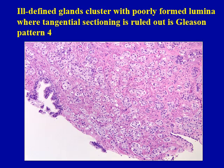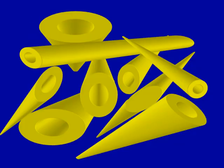This particular criteria was introduced in the 2005 ISUP modified grading system and was defined as a cluster of poorly formed glands where tangential sectioning is ruled out, warranting a diagnosis of Gleason pattern 4. However, when this criteria was introduced it suffered from definitional ambiguity — it was not clarified how to differentiate poorly formed glands from tangential sectioning, which invariably occurs during sectioning, as shown in this particular cartoon.